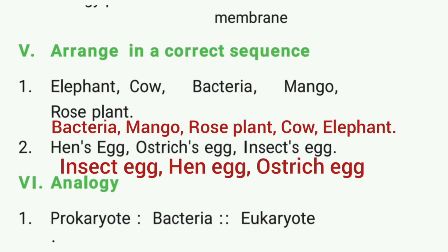Then arrange in the correct sequence. First one: bacteria, mango, rose plant, cow, elephant. Second one: insect egg, hen egg, ostrich egg.